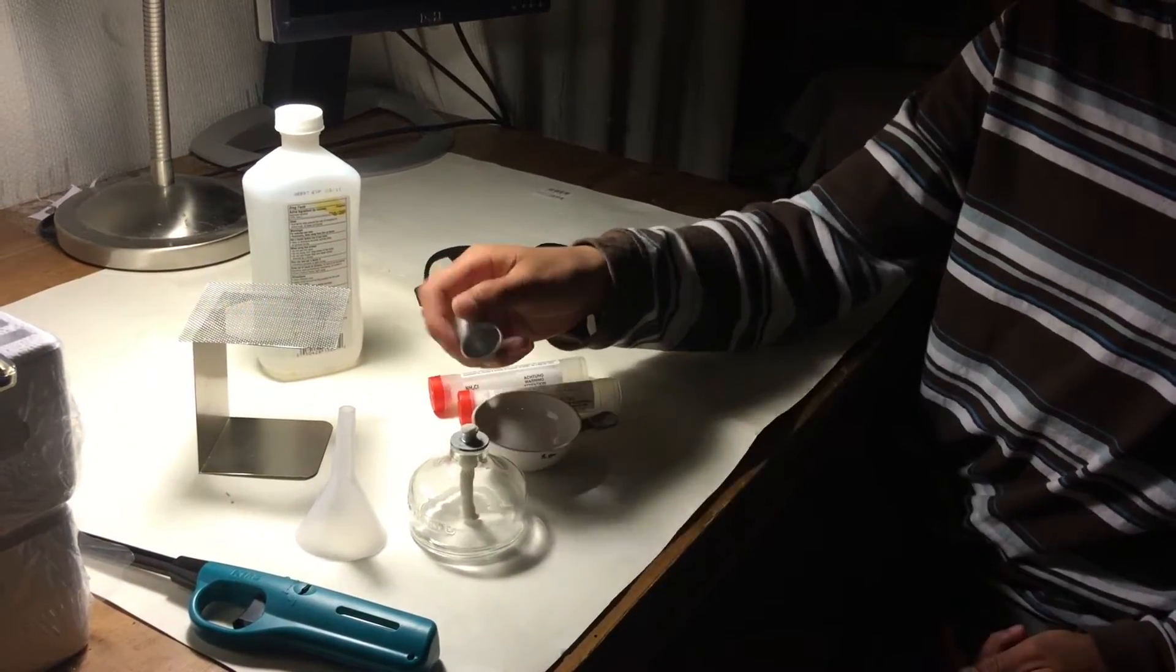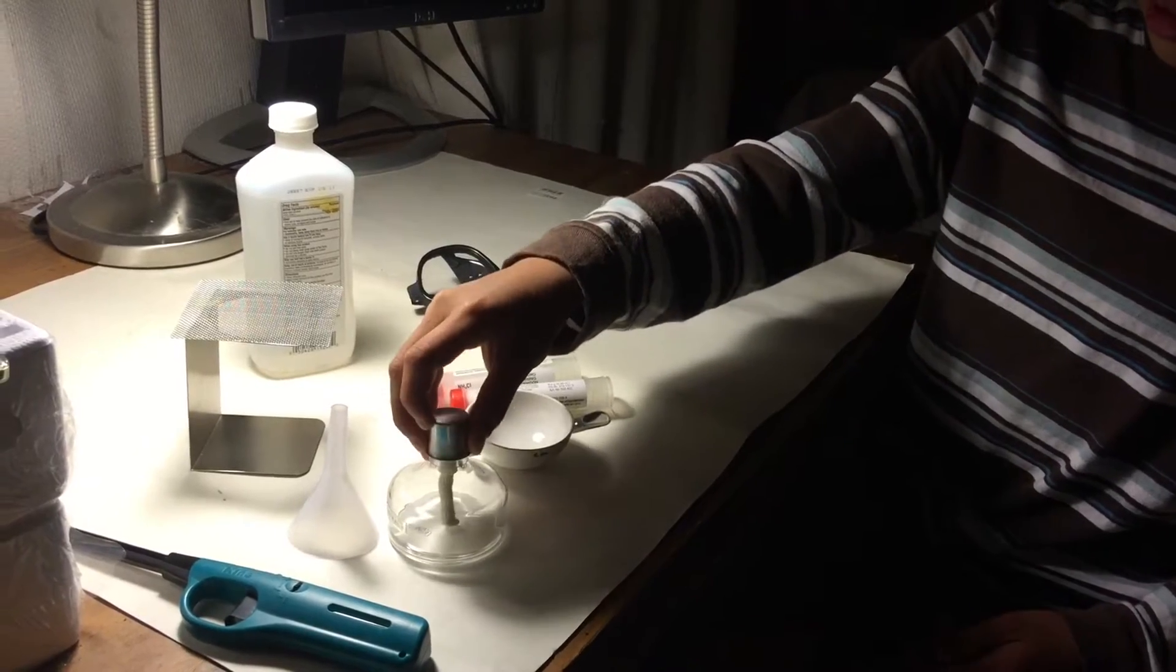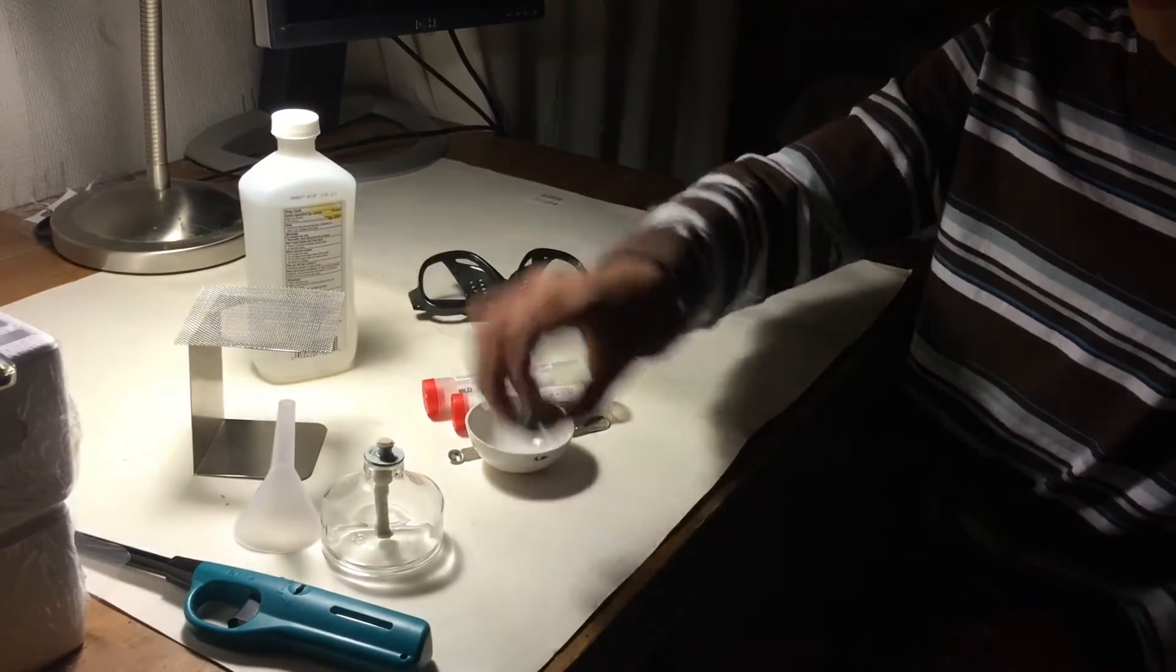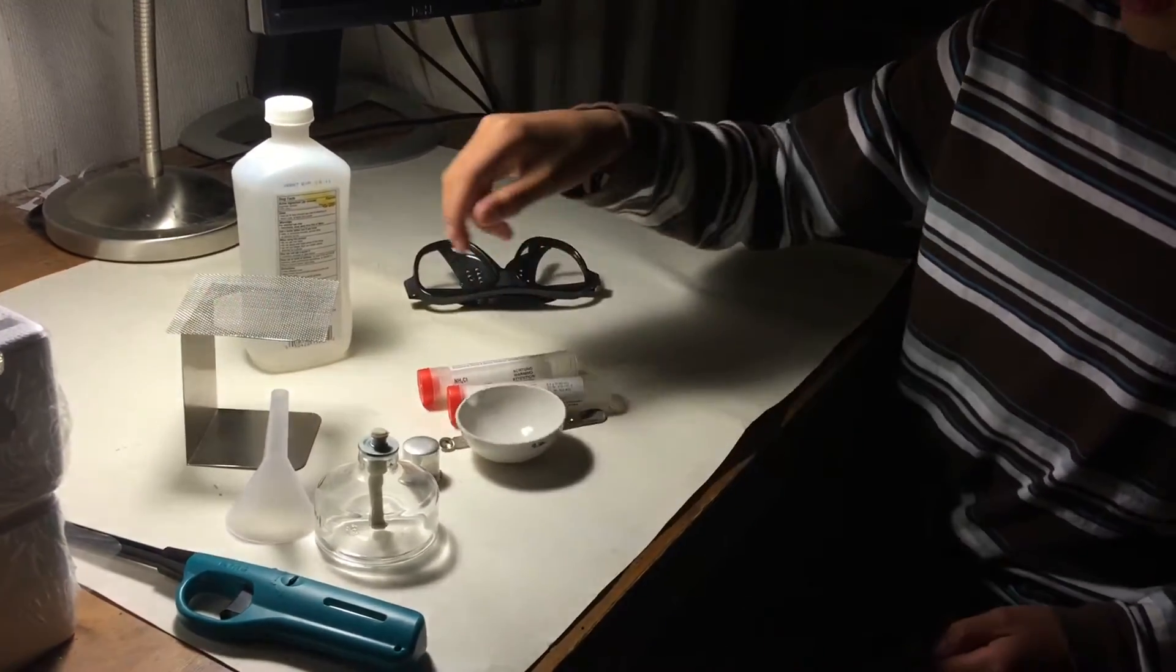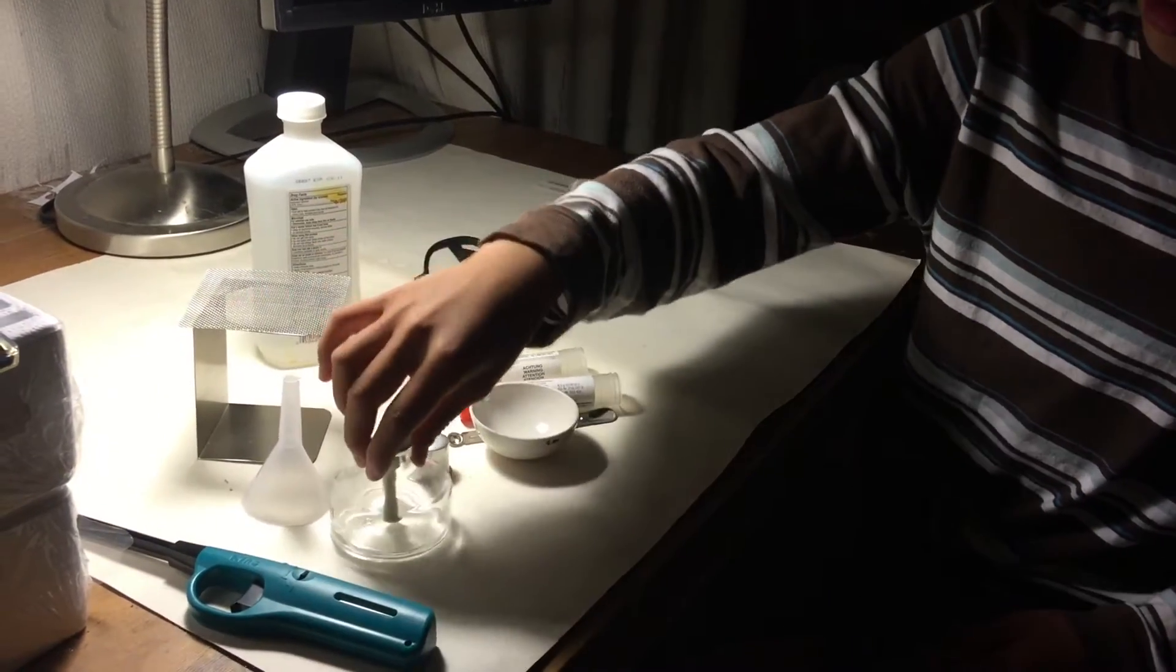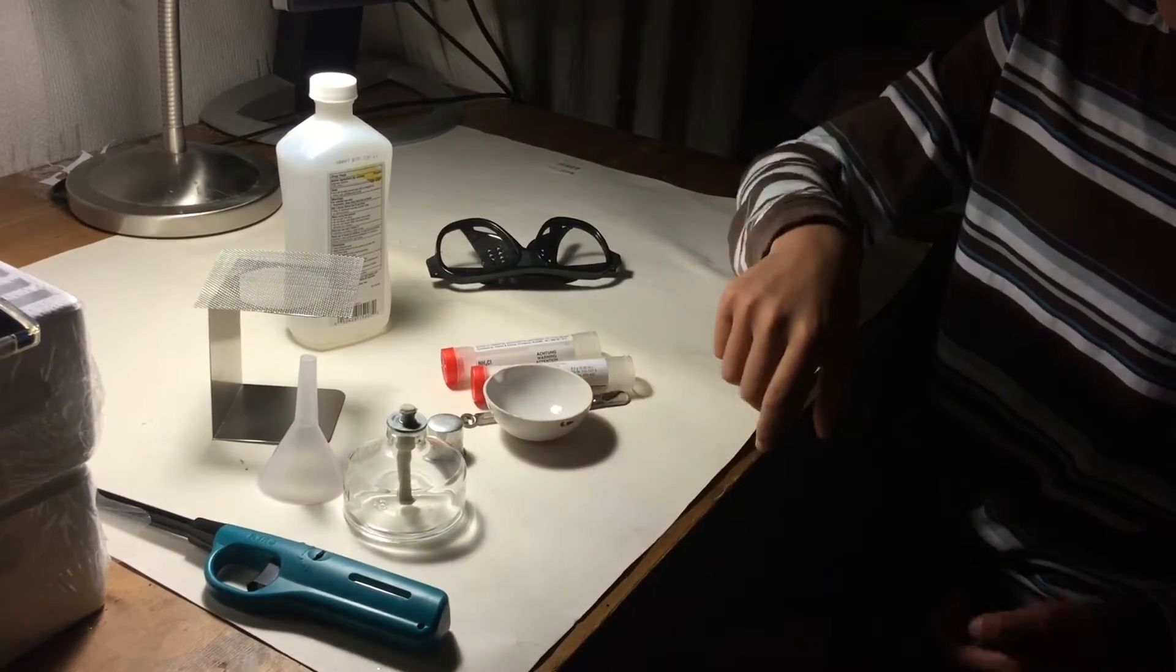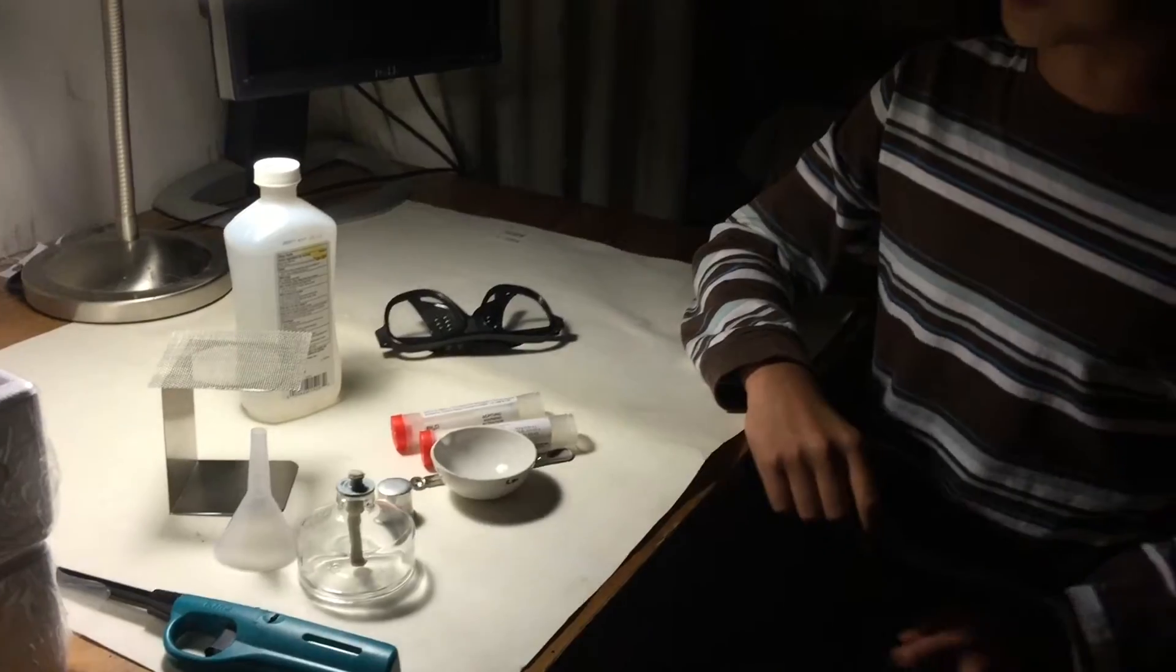After you're done with the experiment, you put this cap on and the fire will go out. We also need a funnel to fill the alcohol burner with alcohol and a lighter to light it up.